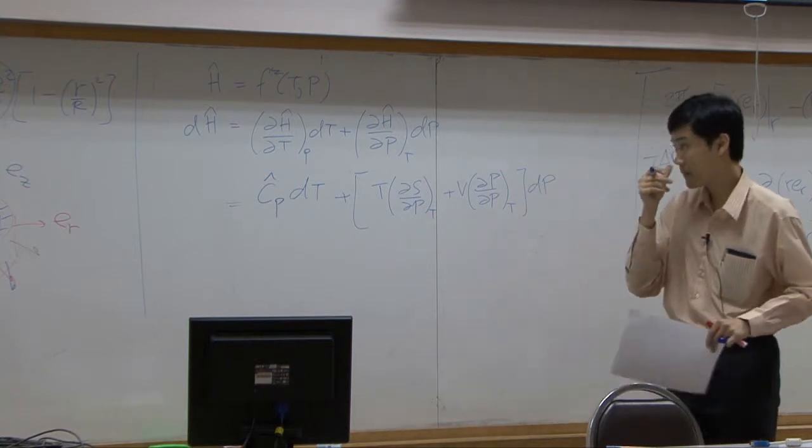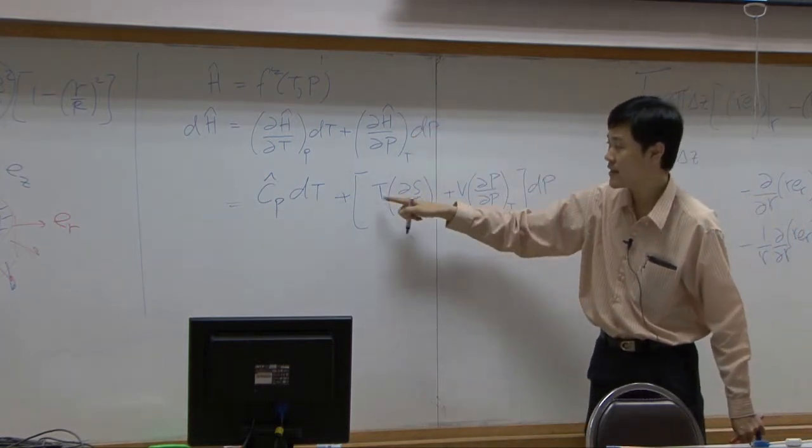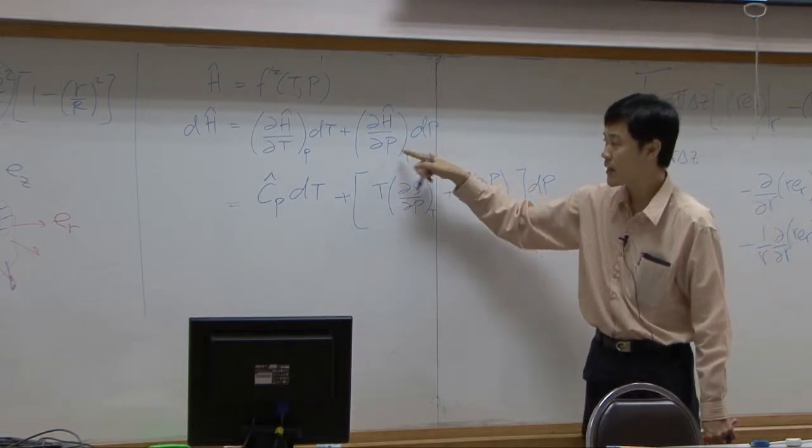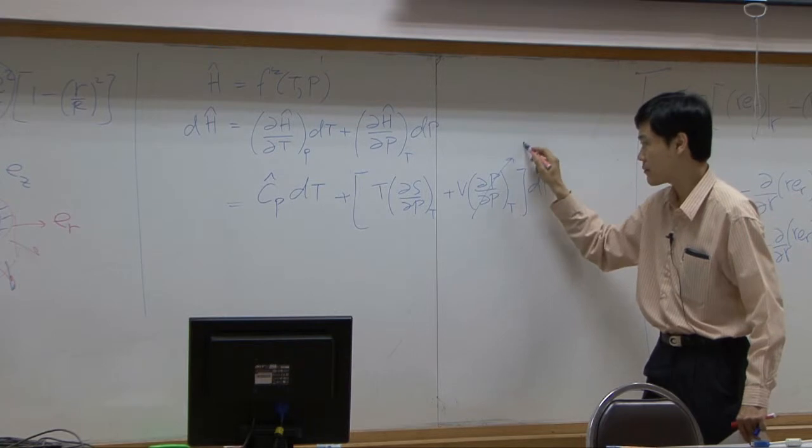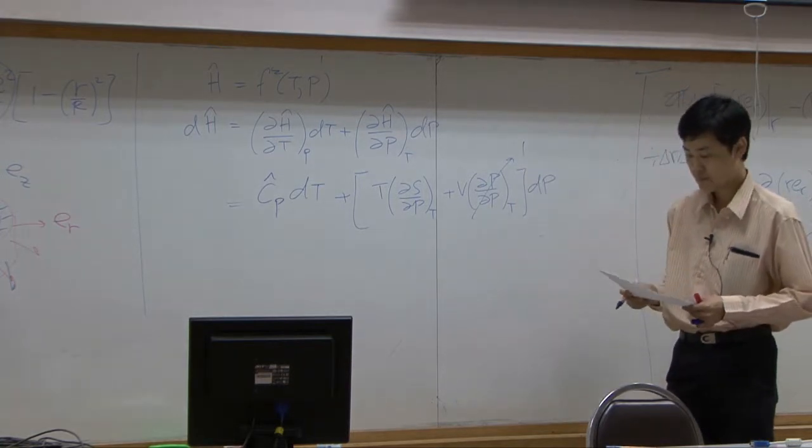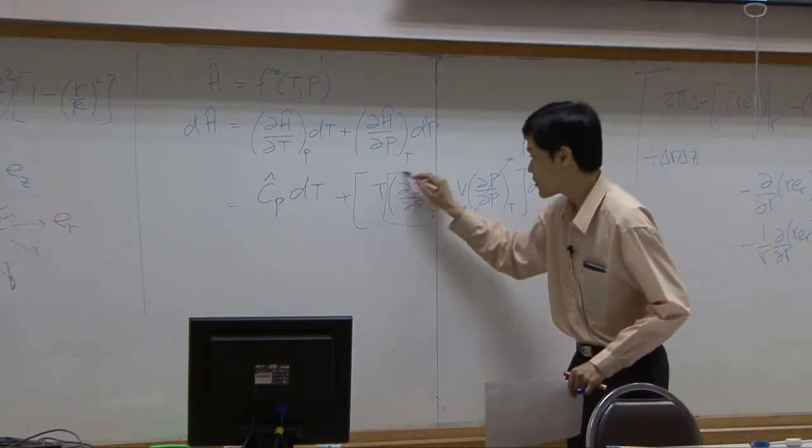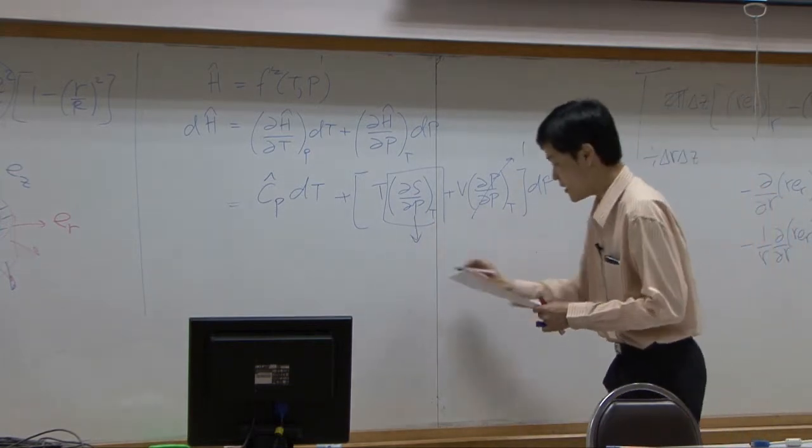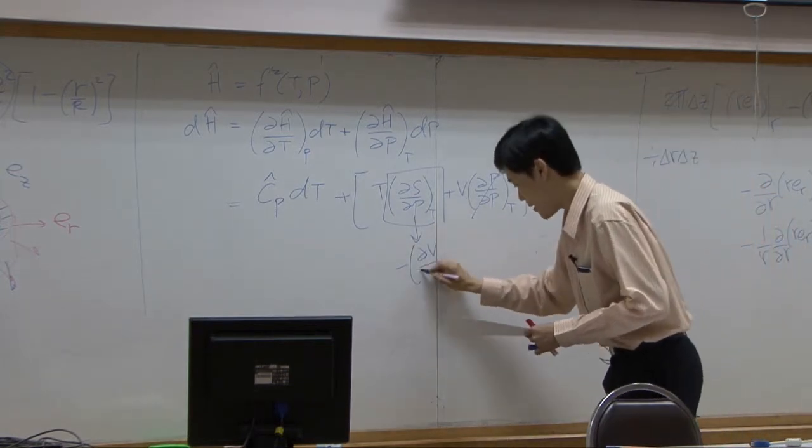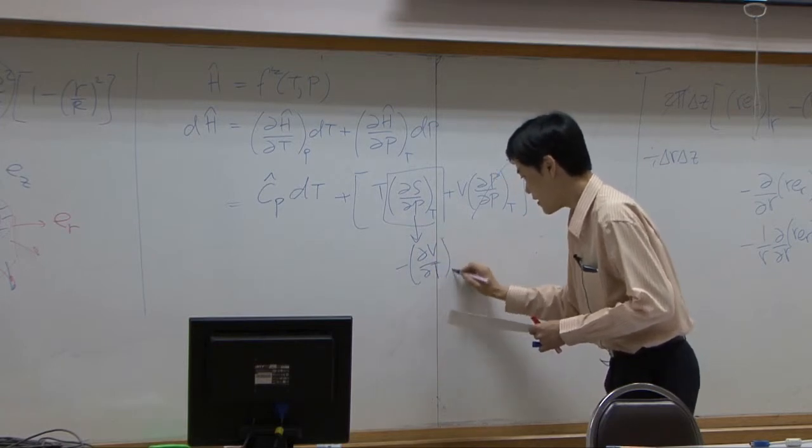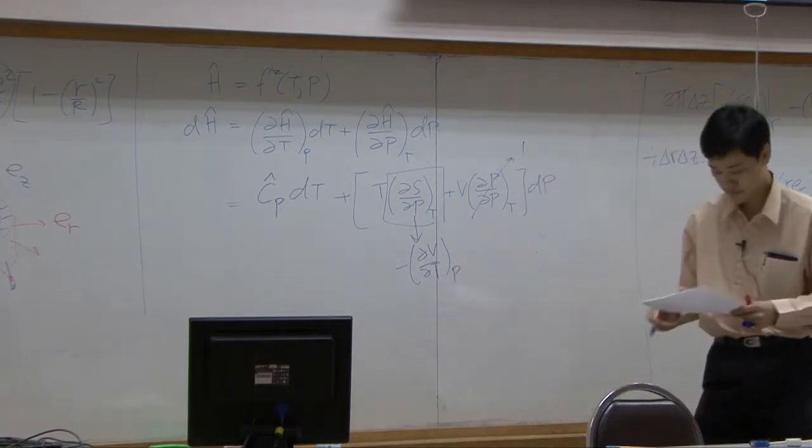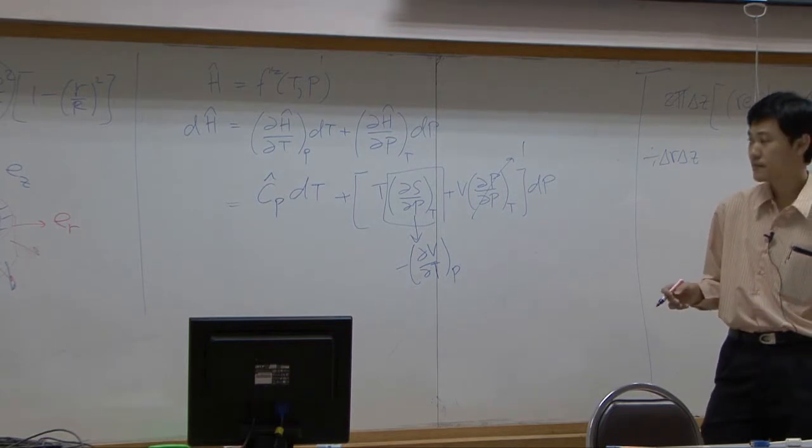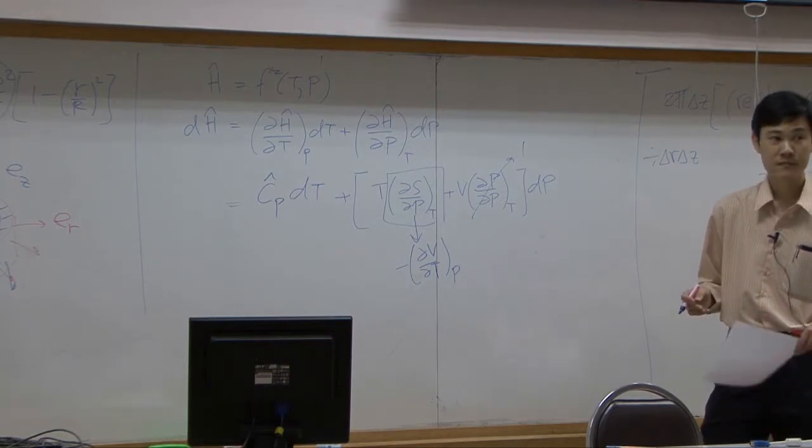If you take enthalpy to be TdS plus VdP, differentiated with respect to pressure for both terms, this term becomes one, and this term according to Maxwell correlation turns to be minus dV by dT at constant pressure.